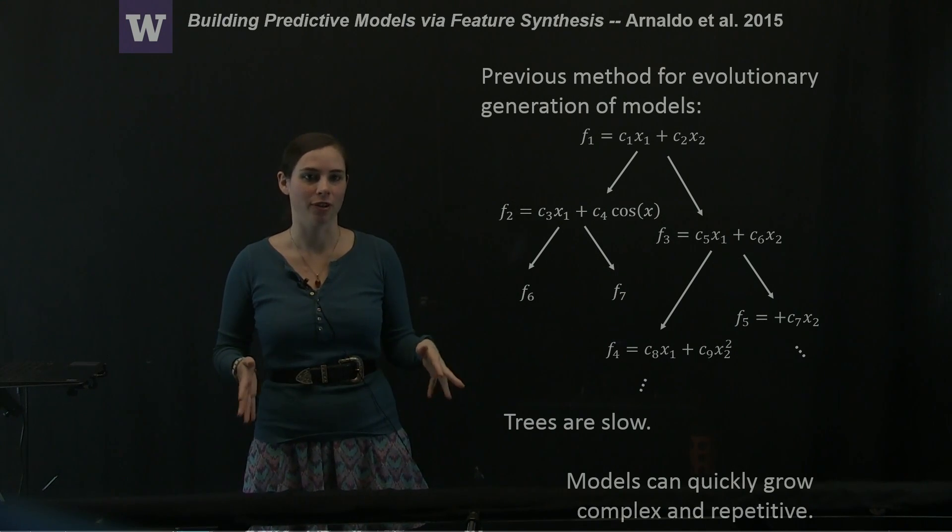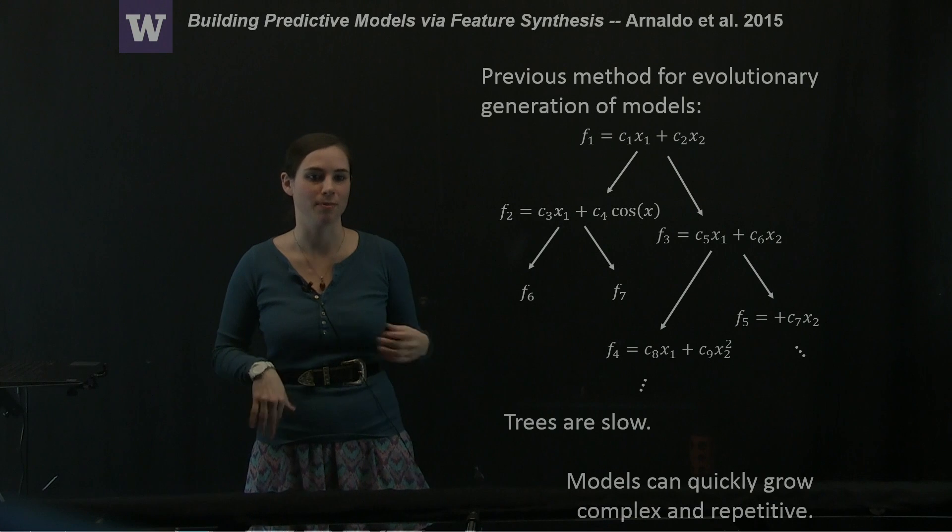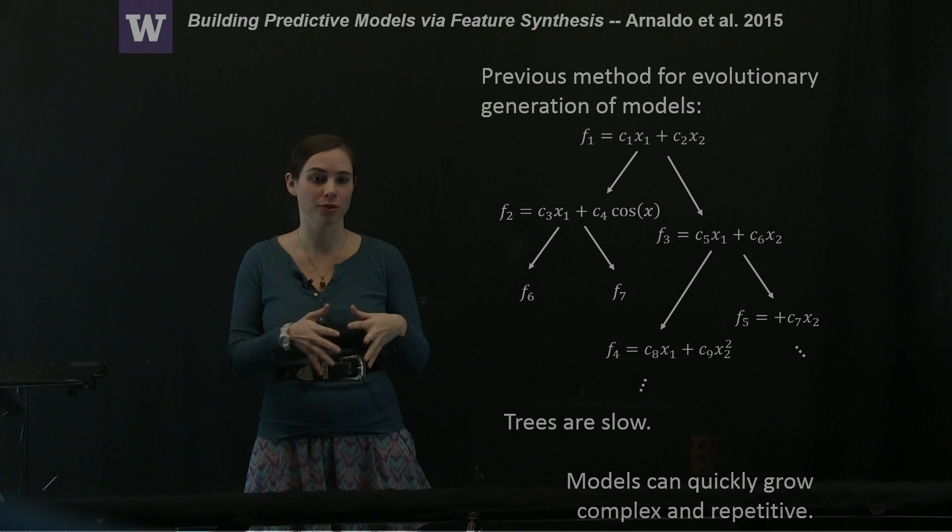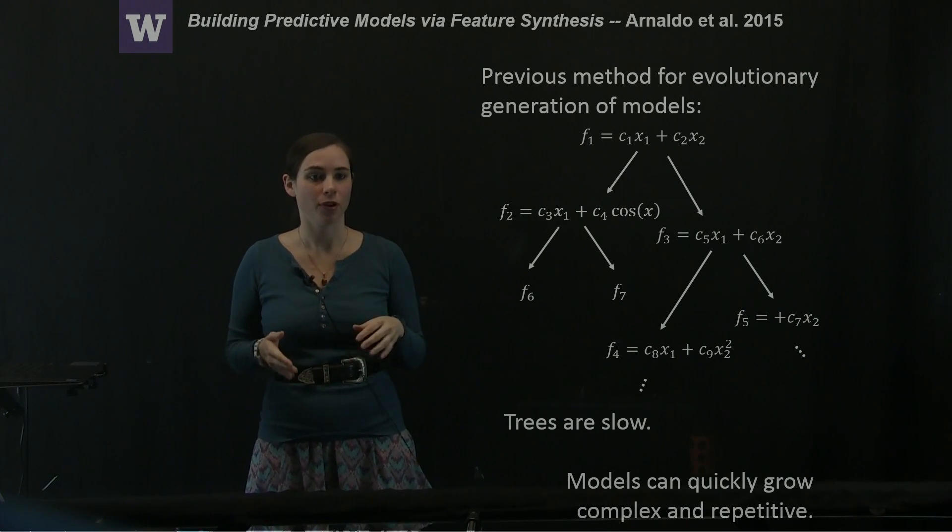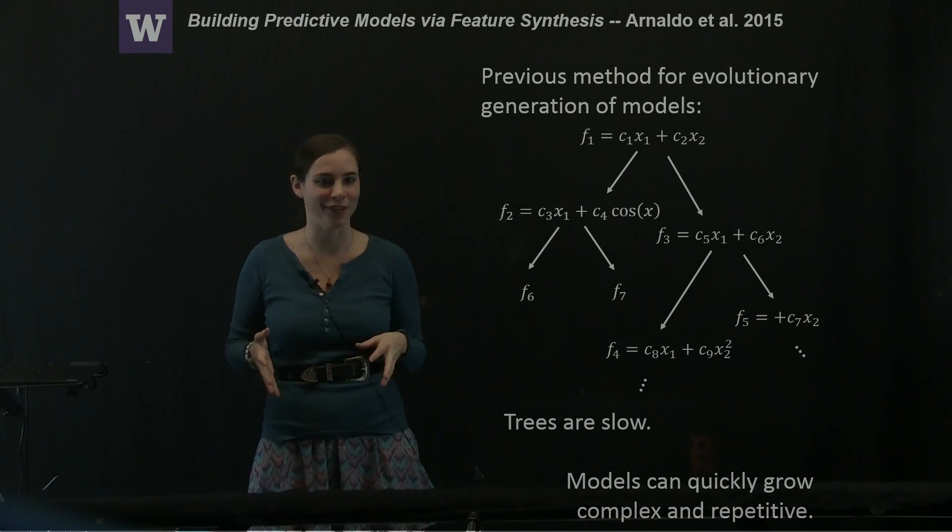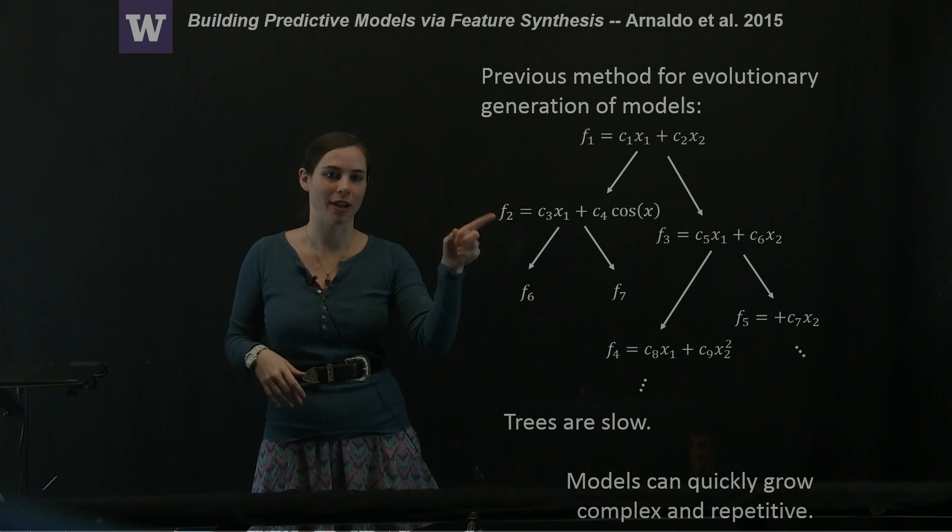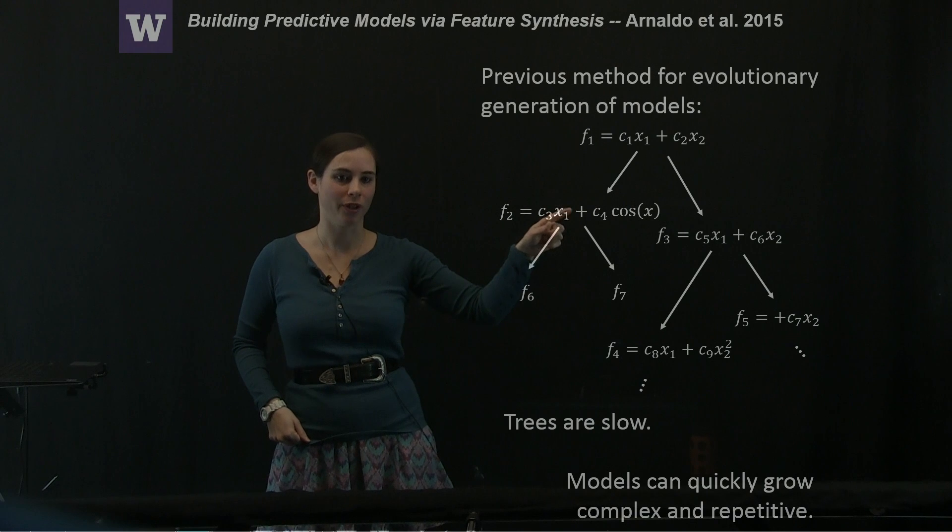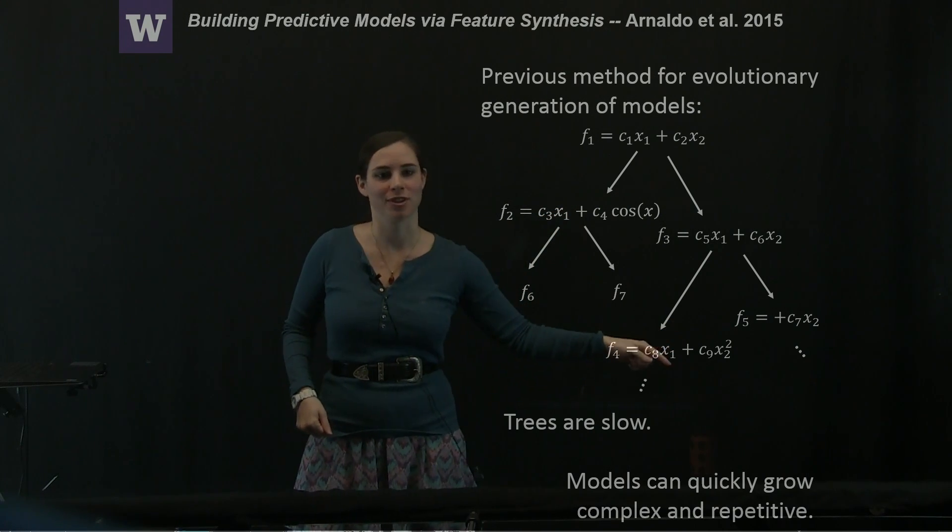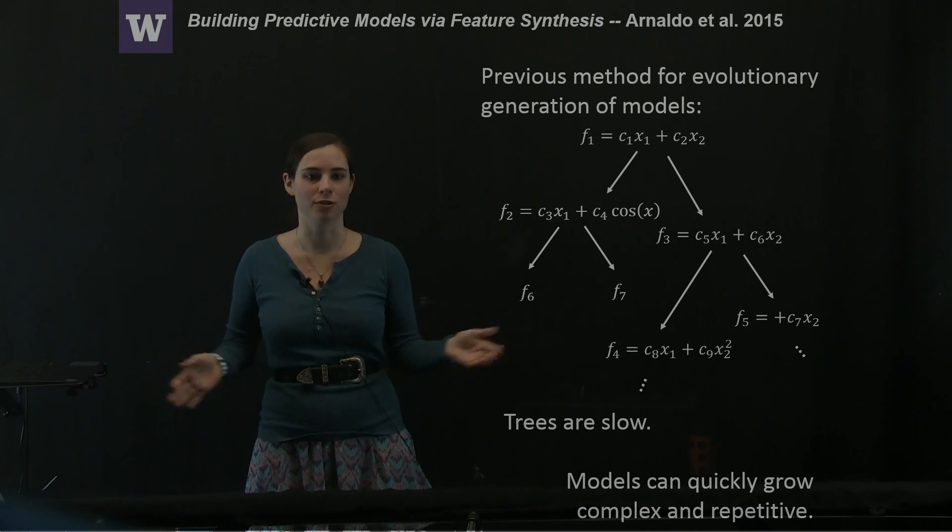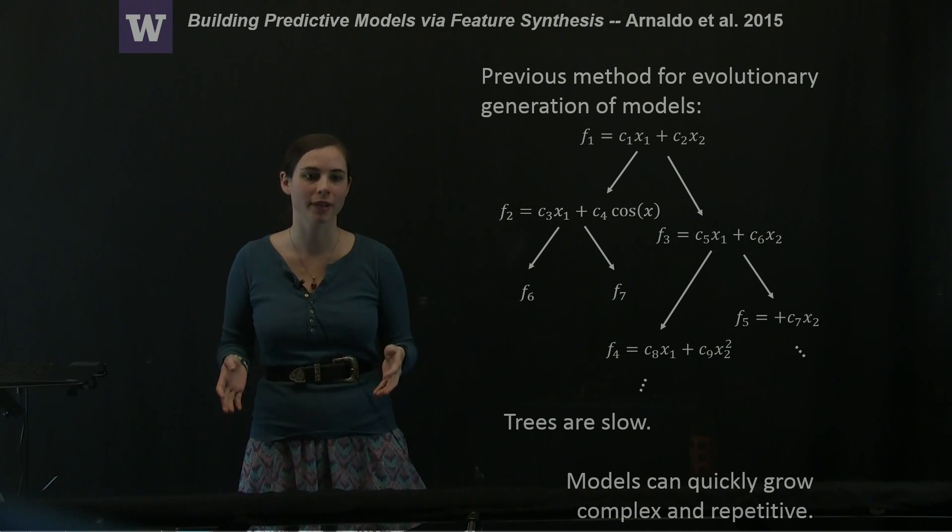Generally speaking, the authors were concerned with this sort of technique because trees are slow and they wanted to reduce the complexity of the problem. There's also a repetitiveness within this type of structure. For example, you'll notice this equation F2 has an X1 linear term as does equation F4. So the authors want to reduce the repetition of storage.